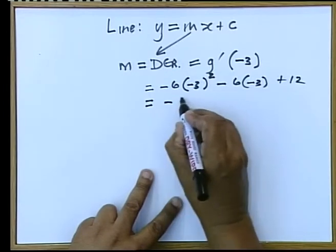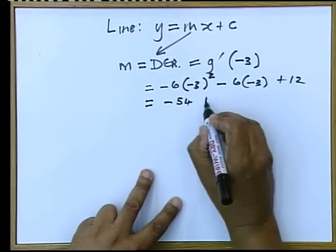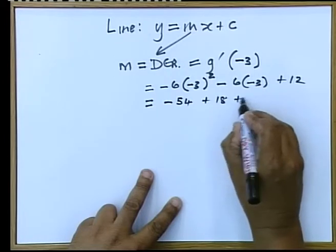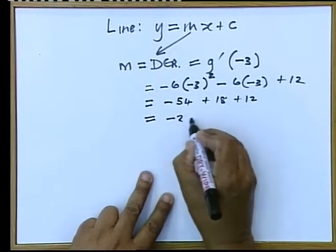Doing a bit of arithmetic, that gives me negative 54, plus 18, plus 12, that gives me negative 24.